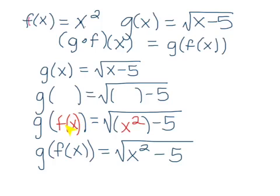So inside the parentheses we're plugging in f of x, which happens to be x squared. And when we simplify, here we can just remove the parentheses because there's nothing we can do in this particular problem. So this is the final answer that we have for the composition of g of f of x.